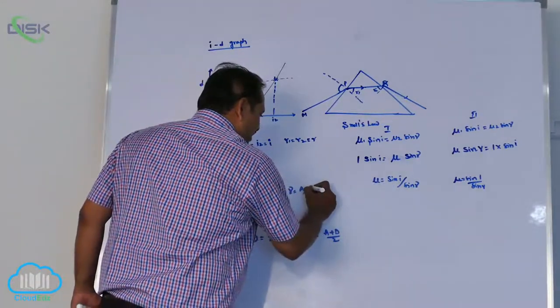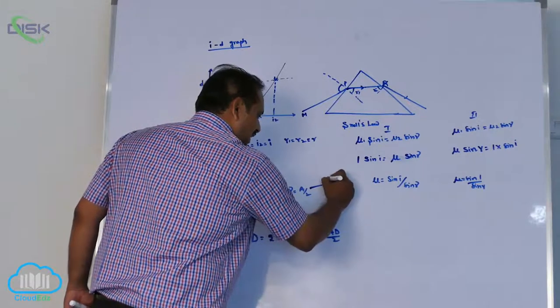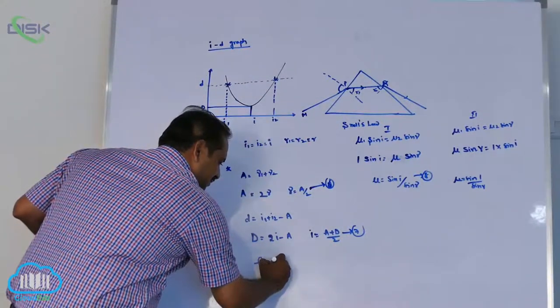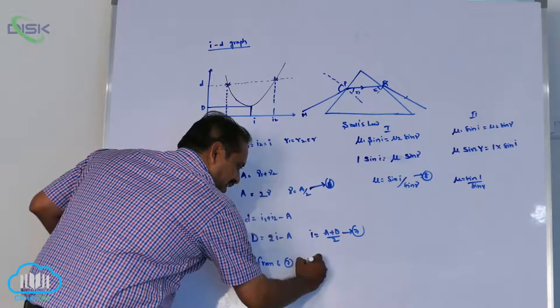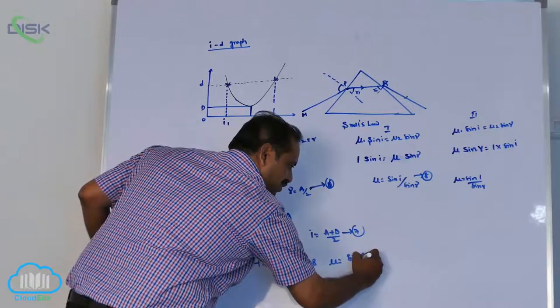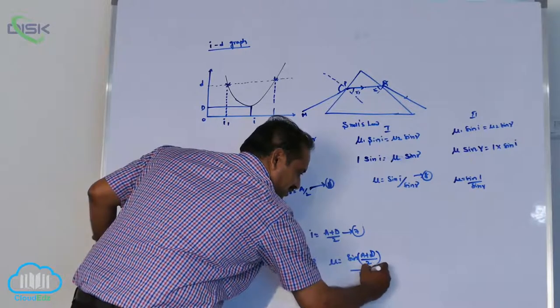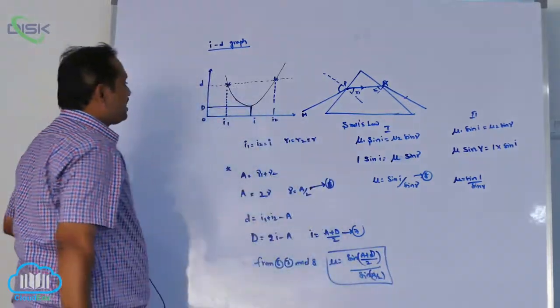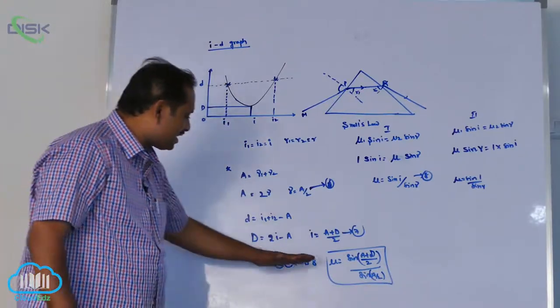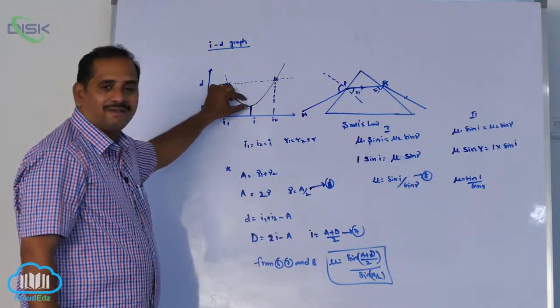From this equation, from equations 6, 7 and 8, mu equal to sine of (a plus D by 2) by sine (a by 2). This condition, take care, it is applicable only at minimum deviation, not all the cases. This restriction is there for this condition: mu equal to sine of (a plus D by 2) by sine (a by 2) is applicable for only minimum deviation condition.